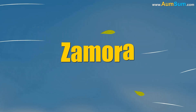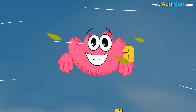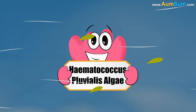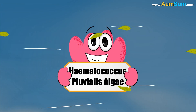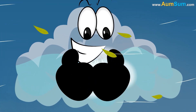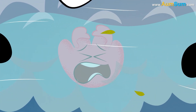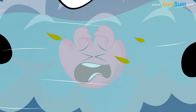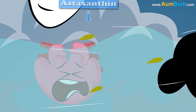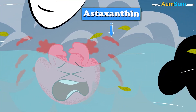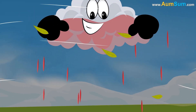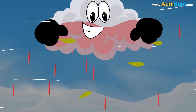Lastly, in Zamora, Hematococcus pluvialis algae actually get caught in the rain clouds. As a result, they get stressed and produce a red pigment called astaxanthin, thus causing blood rain.